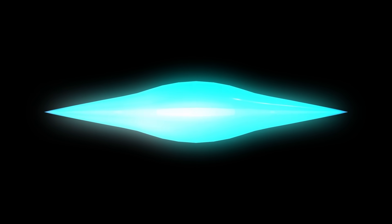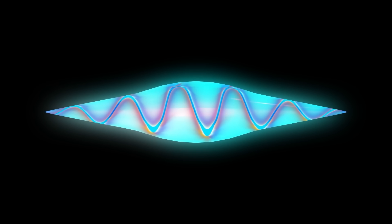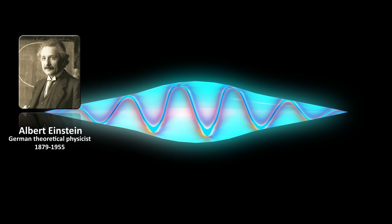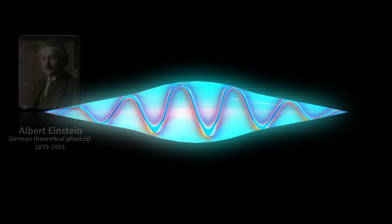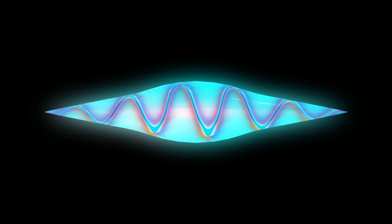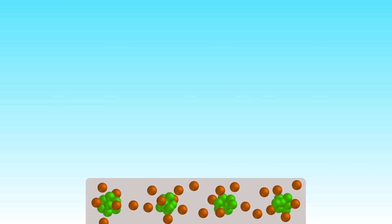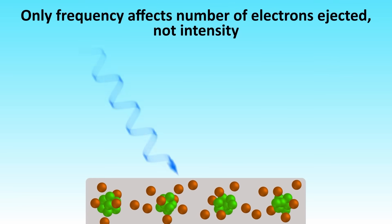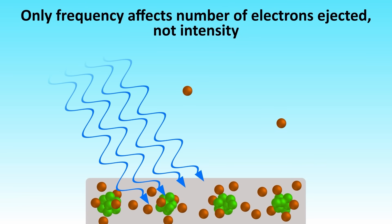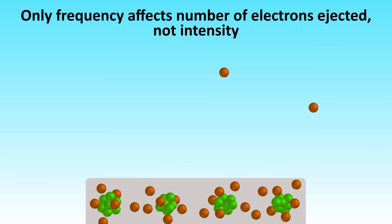However, about 100 years after Young's experiment and 200 years after Newton's corpuscular theory, none other than Albert Einstein showed that wave behavior or not, light must come in discrete packets of energy — which today we call photons — because that's the only way to explain the photoelectric effect. The photoelectric effect is when electrons are ejected from the surface of a metal when a certain frequency of light is shone on it. Whether the electron is ejected is not affected by the intensity of the light, only its frequency. If light were a classical wave, the energy of the light would depend on its intensity, not its frequency.